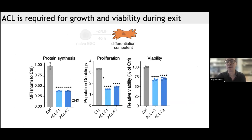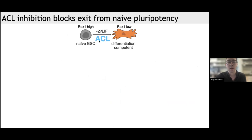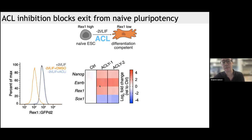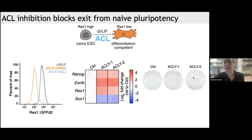We wanted to query the pluripotent state of these cells. Using a Rex1 reporter of naive pluripotency — high in the naive state and decreasing with withdrawal of 2i and LIF — we see this reporter decreases during exit from pluripotency. But if you add an ACLY inhibitor specifically during 2i and LIF withdrawal, it traps these cells in the naive state. The cells that remain have not dismantled pluripotency networks, with higher levels of naive transcription factors and decreased SOX1. Functionally, ACL-deficient ESCs retain the ability to form naive colonies even after 2i and LIF withdrawal, confirming they are functionally trapped in the naive state.